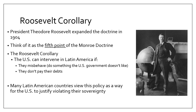The Roosevelt Corollary stated that the US can intervene in Latin America if, first, a country misbehaves — meaning they're doing something the US government doesn't like, such as their form of government, their leader, or human rights issues. Second, if they don't pay their debts — if the US or US businesses have loaned money to the country and it refuses to repay, the US can intervene. Intervention could range from sending advisors to a full-fledged invasion and installing a new government. Many Latin American countries viewed this policy as the US justifying violations of their sovereignty and forcing itself on smaller, weaker nations.